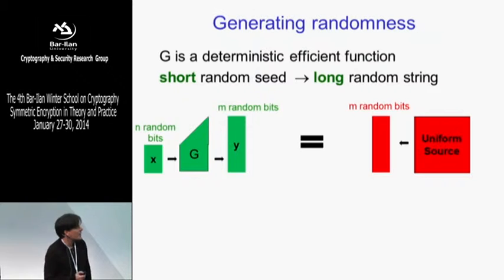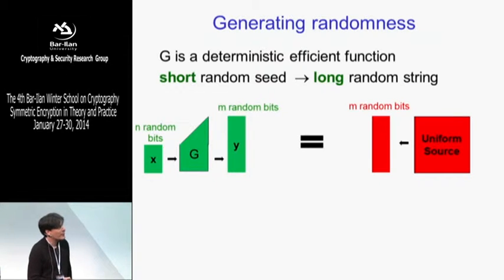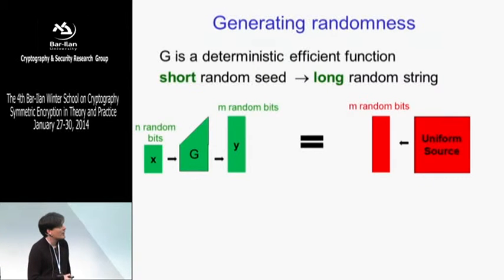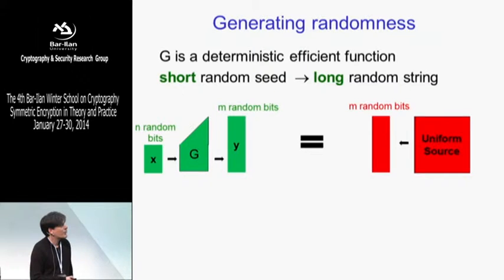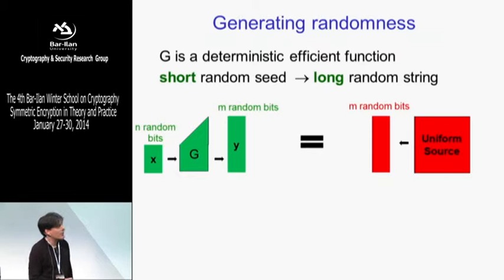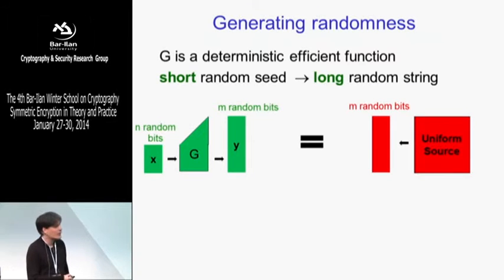Here's an initial attempt. We want this function G to be deterministic and efficient — efficient meaning polynomial time. We want to expand a short random string, usually called a seed, into a very long random string. We start from n random bits, plug them into this deterministic function, and get a distribution on the outputs. Ideally, the output string would look exactly like a uniformly random string — like m random bits.